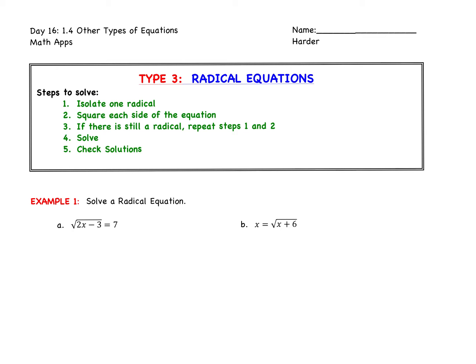Let's jump right into the first part, which covers radical equations. A radical equation is any equation that has a square root in it. There are five steps to solve these equations: we're going to isolate the radical, then square both sides. If there's still a radical, you'll have to repeat that process — isolate the radical again and square it. Then you'll solve and check your solutions.